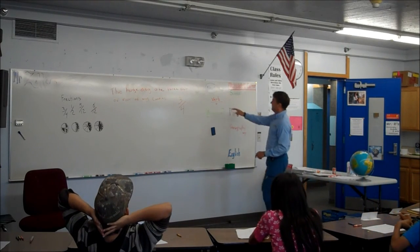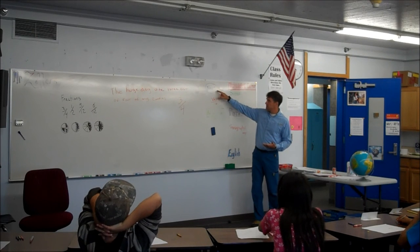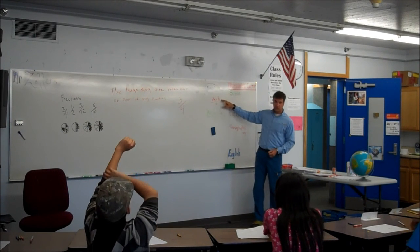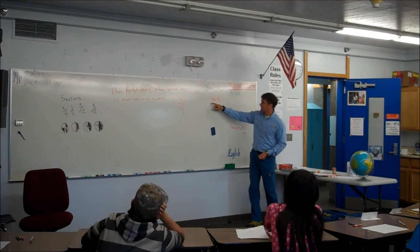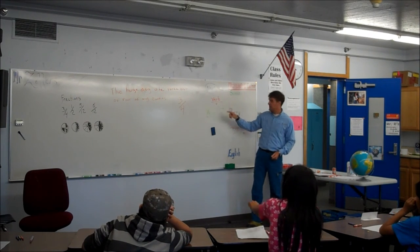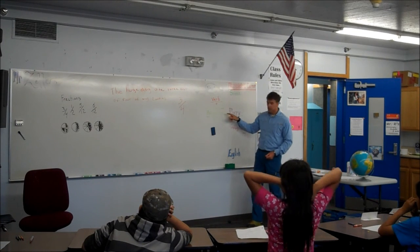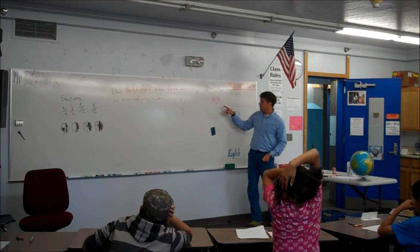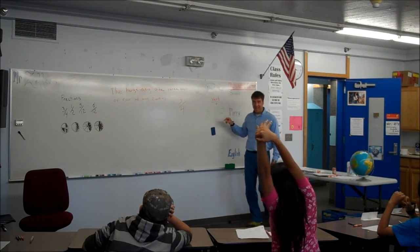Let's look here. What is this word? Noun. And we have a circle around it. What's this word? Verb. And you can see it's underlined, and I put a V under it, and it's red. And this green word is what? Adjective. So I put a little box around it, and I put an A under it.